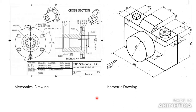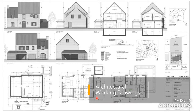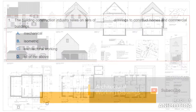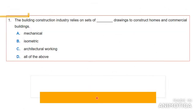These drawings are called architectural working drawings. You have your elevations, floor plans, foundation plans, site plans, location plans, and so on. The answer to this question is architectural working drawings. If you want to construct a building, homes, or commercial buildings, you use architectural working drawings.